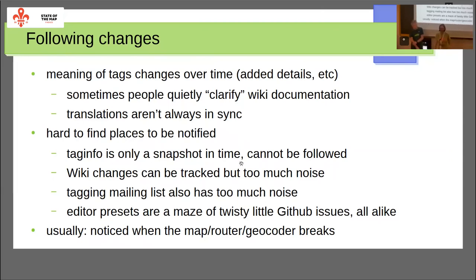For Nominatim, I usually notice things break when people write issues, and you look at the wiki page and think, 'oh, that has changed.' For most data users it's the same — we don't really have any source where we can reliably follow changes. The wiki change tracking, mailing lists, editor presets — they're all too high volume to really follow. So if you're a data user, this is a full-time job. You really need one person who just looks at what's going on in OSM and goes to conferences.